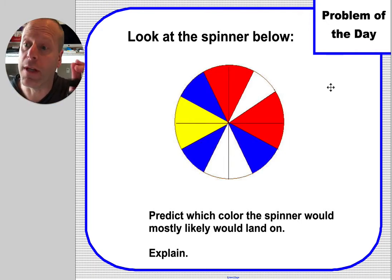And it's going to land on one of these colors. I would like you to predict which color the spinner would most likely land on most of the time when it's spun. And then explain how you know.